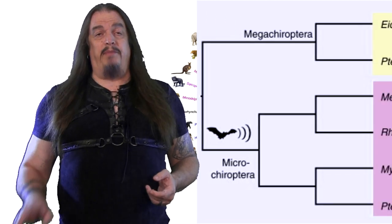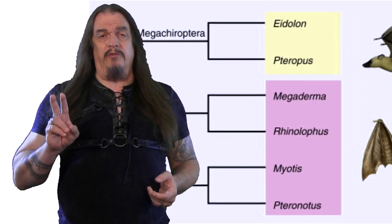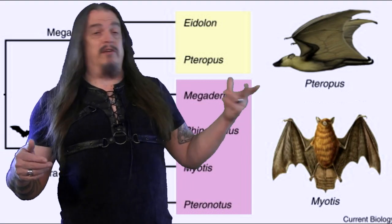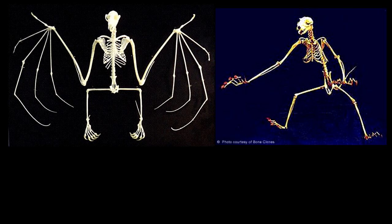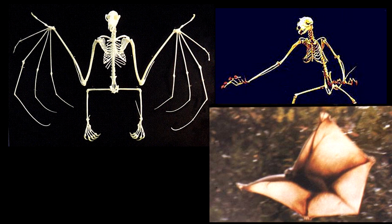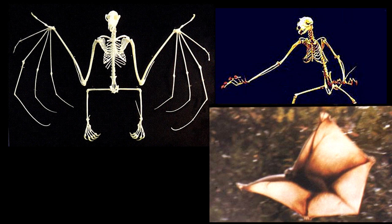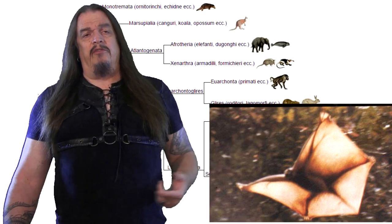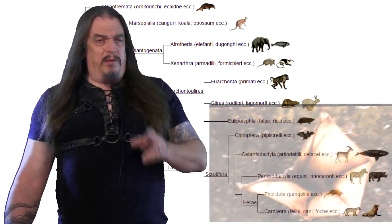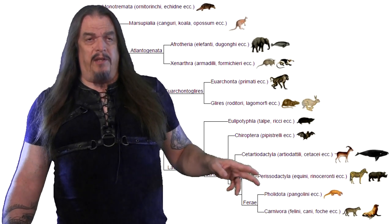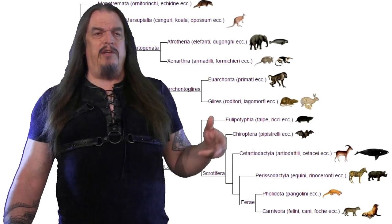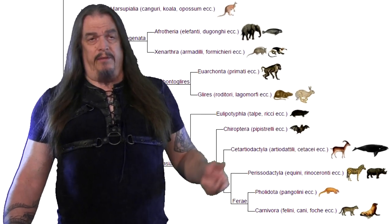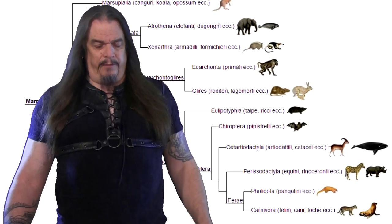For example, bats were once classified into two different groups, with microbats associated with insectivores and megabats classified along with primates, because their skeletons look so much like colugos — which were also called flying lemurs because they looked so much like prosimians. At one time, colugos looked like the origin of both bats and primates, but it turns out that all bats are in the same family, and they are genetically more closely associated with rhinos than with primates, even though that just doesn't seem right at first thought.